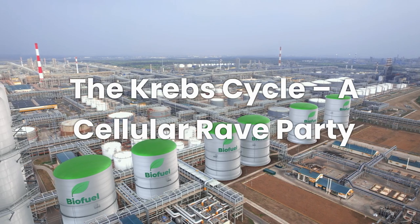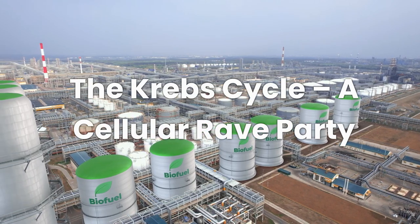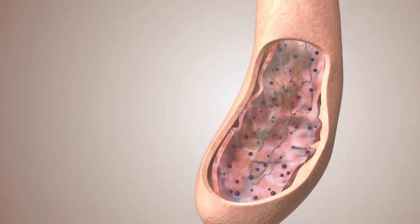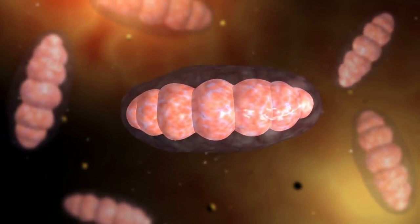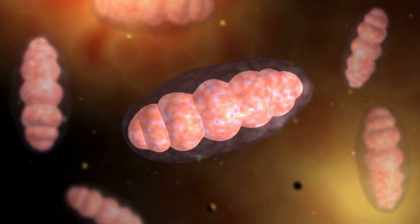Next up, the Krebs cycle, also known as the citric acid cycle. Now things are getting interesting. This part happens inside the mitochondria, in the matrix. And no, we're not talking about a sci-fi movie.